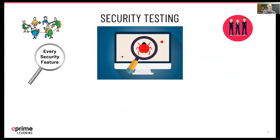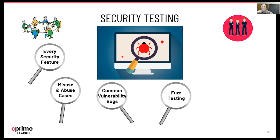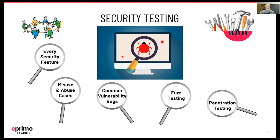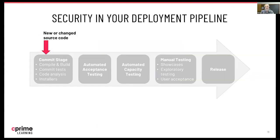Then there's all the security testing. We need to test every single security feature. We need to test all of the misuse and abuse cases to make sure we've protected against them. We need to test for common bugs like buffer overflow and SQL injection. We need to be doing fuzz testing to be sure the system can handle unexpected situations. And we need to be doing penetration testing. These are all things our security team can provide us the tools and standards for as we build our automated test systems.